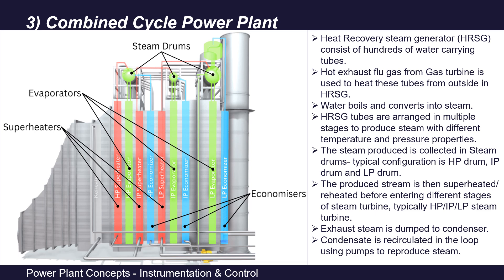The exhaust steam, after rotating the turbine blades, is cooled to condensate form. This condensate is collected in the condenser and recirculated in the loop again using pumps to produce steam. It is essentially a closed cycle — water enters the system once, is heated to produce steam, that steam rotates the turbine blades connected to the rotor shaft producing electricity, the exhaust steam is condensed, collected in the condenser, and pumped back to the drums. Any losses due to leakage are compensated by demineralized water.